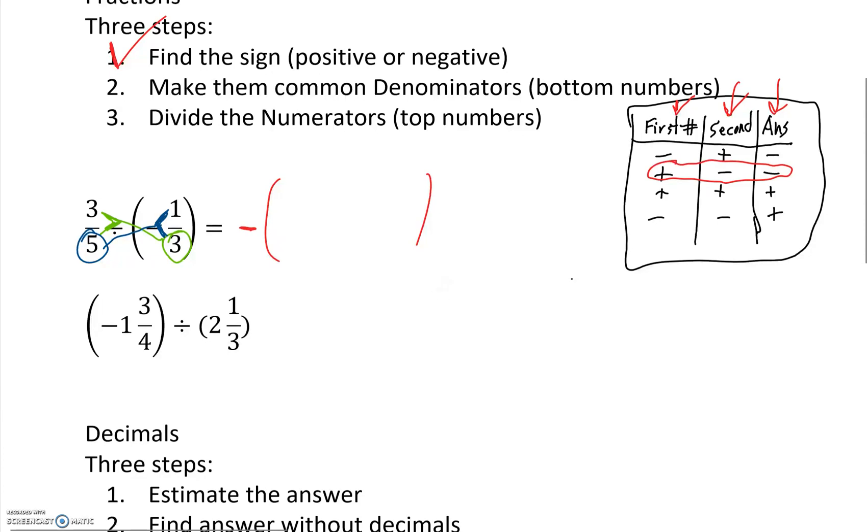If we do that, 3 times 3 is 9, 3 times 5 is 15, then we have to have our dividing symbol between the two fractions, and then 5 times 1 is 1, 5 times 3 is 15. Good, we're one step closer.